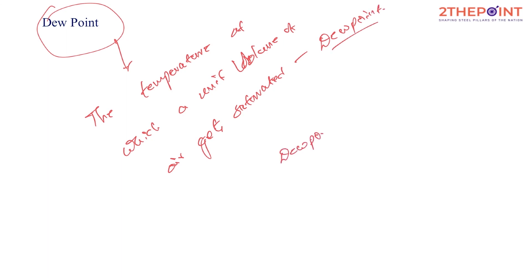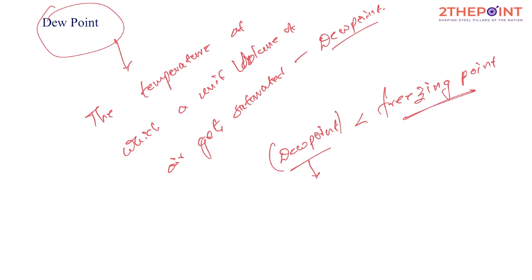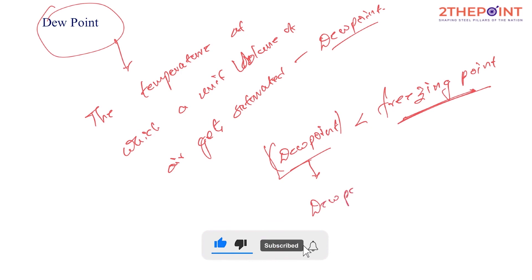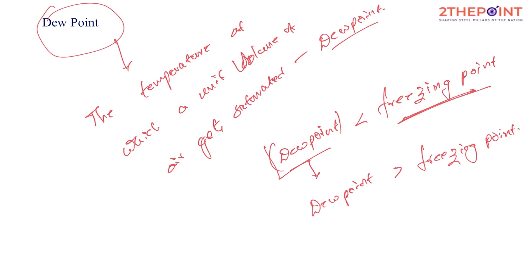If the dew point is less than the freezing point — the point at which liquid becomes solid and water becomes ice — then rainfall mostly happens in the form of snow. When the dew point is attained at a temperature less than freezing point, the moisture released immediately turns into ice, and we get snowfall, as seen in north India. When the dew point is attained at more than the freezing point, we get simple rainfall.